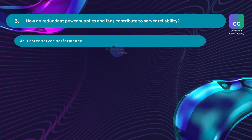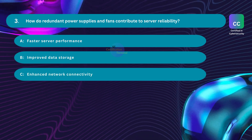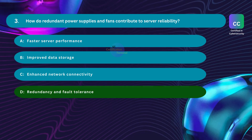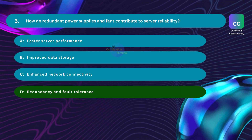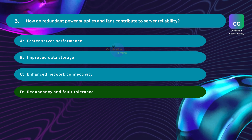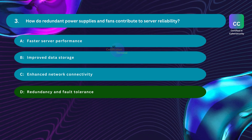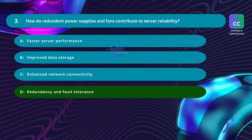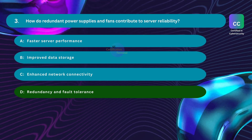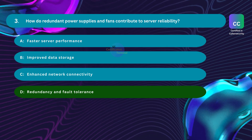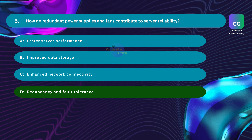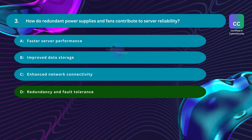How do redundant power supplies and fans contribute to server reliability? Option A: Faster Server Performance. Option B: Improved Data Storage. Option C: Enhanced Network Connectivity. Option D: Redundancy and Fault Tolerance. The correct answer is Option D: Redundancy and Fault Tolerance. Redundant power supplies and fans enhance server reliability by providing redundancy and fault tolerance, essential for ensuring continuous operation and minimizing the risk of downtime due to hardware failures. If one power supply or fan fails, the redundant one can immediately take over, ensuring uninterrupted operation.